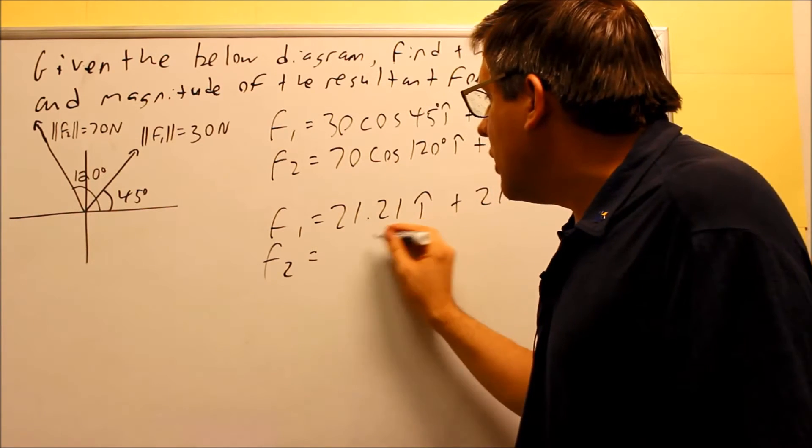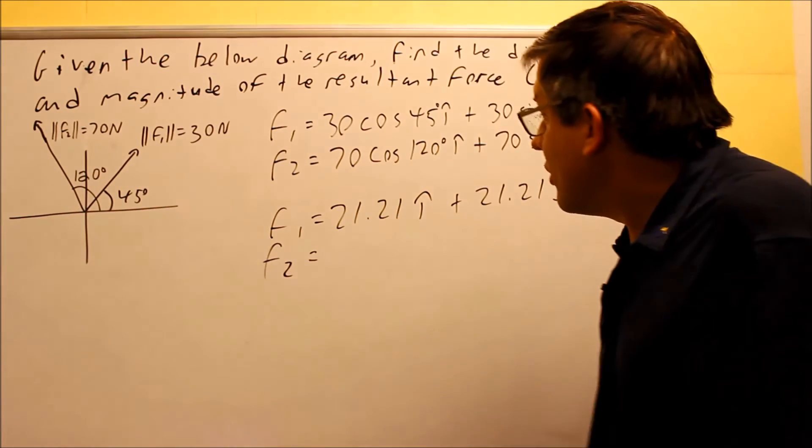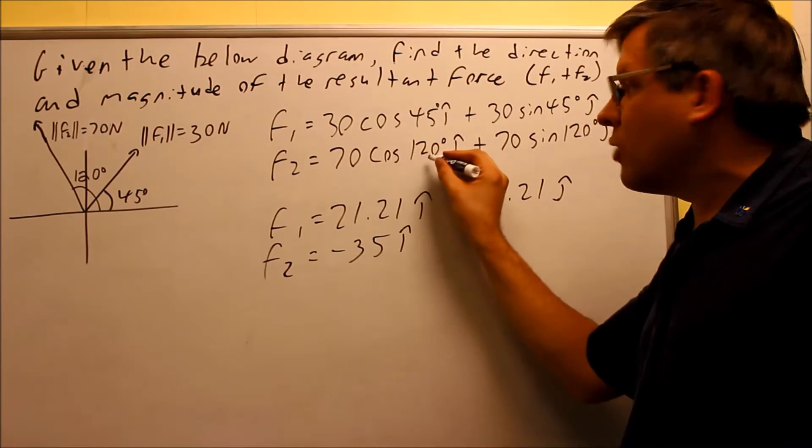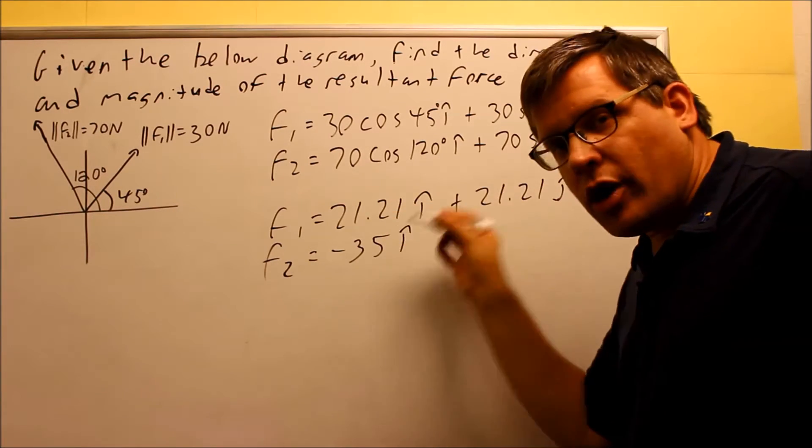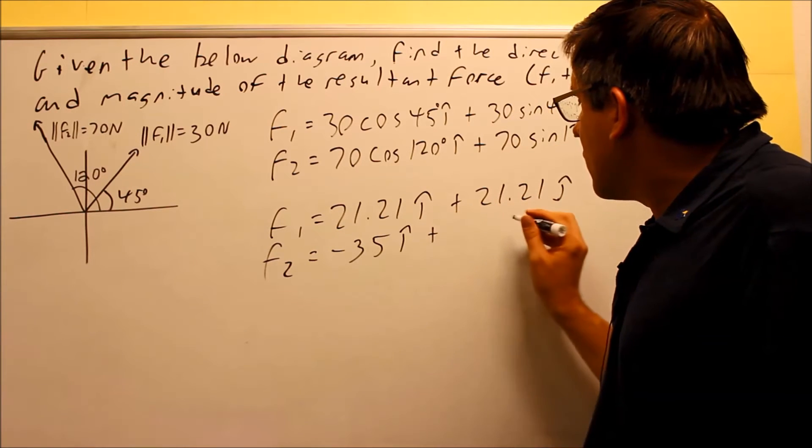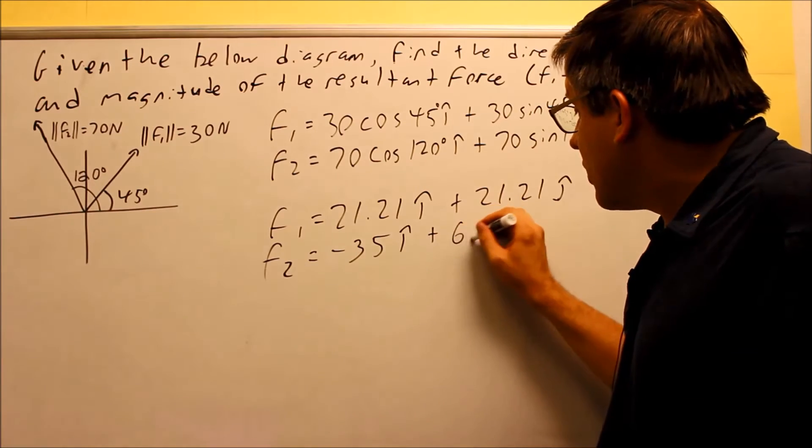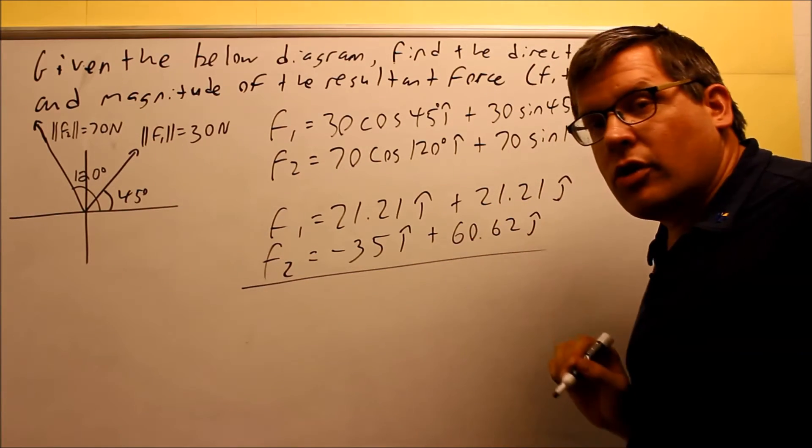F2 is going to be 70. Let's go ahead and do the decimal version. 70 cosine 120 in the calculator. That's going to give you negative 35i. We know that cosine 120 from the table is negative one-half. So, we could have gotten it that way, still would have given us negative 35. This one, if we write that as a decimal, okay, and use the calculator for that one, you're going to get 60.62j. That's the decimal equivalent for that one.